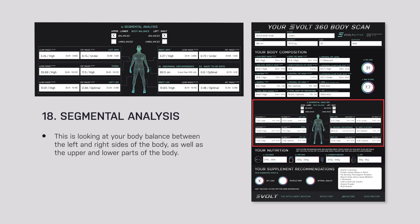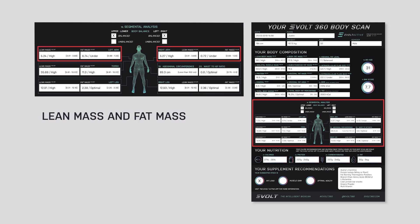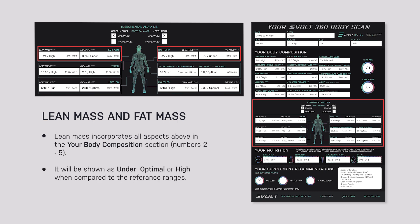Then we move on to segmental analysis. Segmental analysis looks at body balance between the left and right sides of the body and the upper and lower parts. We have lean mass and fat mass for your left and right arms. Lean mass here incorporates everything — skeletal muscle, protein, mineral, and total body water — everything except fat mass. It is shown as under, optimal, or high compared to the reference ranges, and the same applies to the torso and left and right legs.